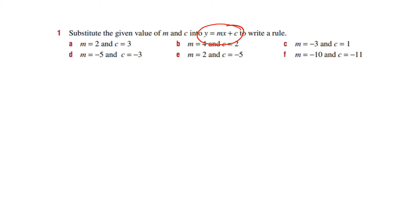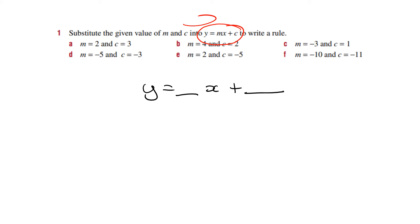This question is asking us to substitute these values into the equation. So we write y equals, and what goes in the spaces is m and c. In this case m is 2, so I put 2 there. c is 3, so I put 3 there. So my answer would be y equals 2x plus 3.